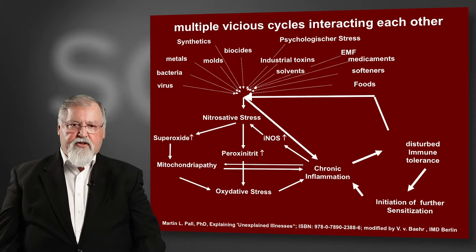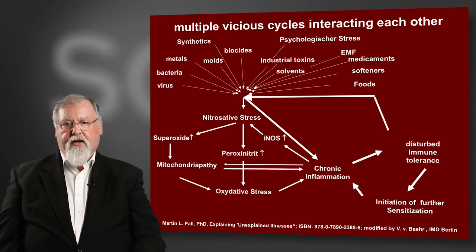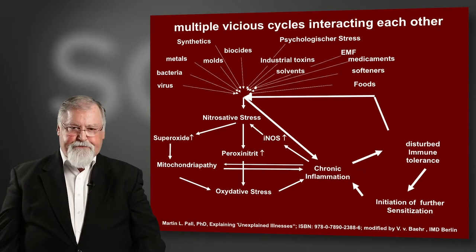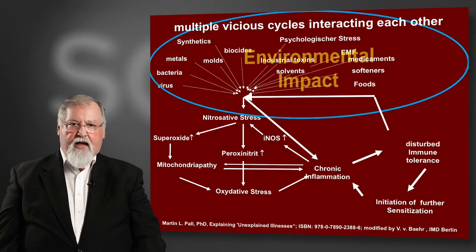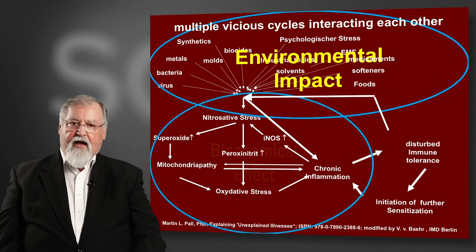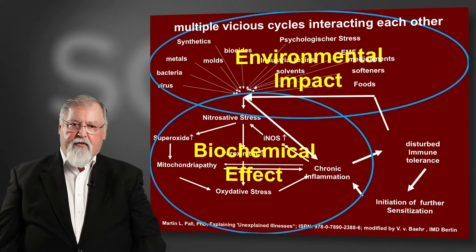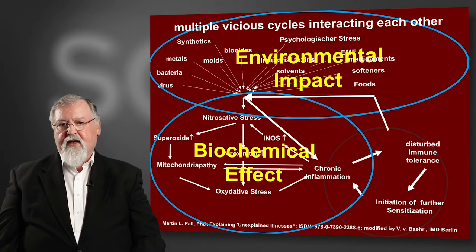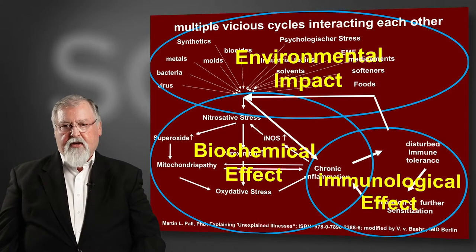So we have at least two cycles: one on the left side, one on the right side, feeding each other. We have here the environmental impact, afterwards a biochemical effect, and then an immunological effect.